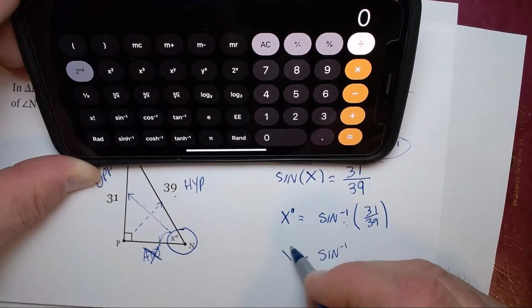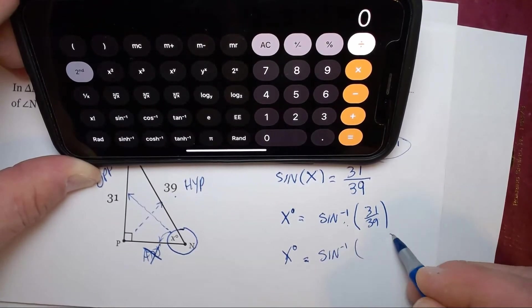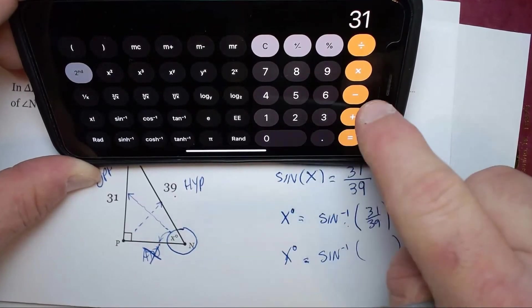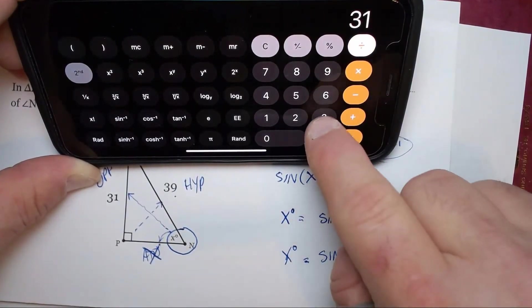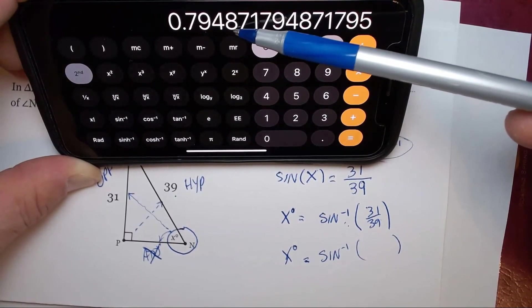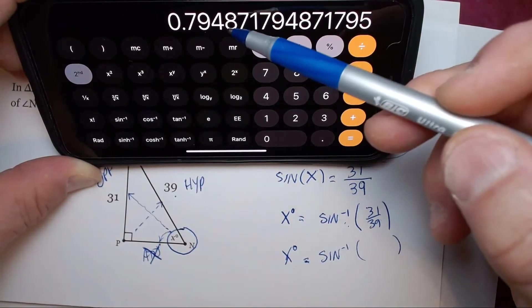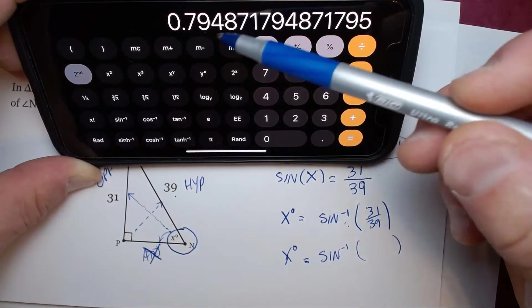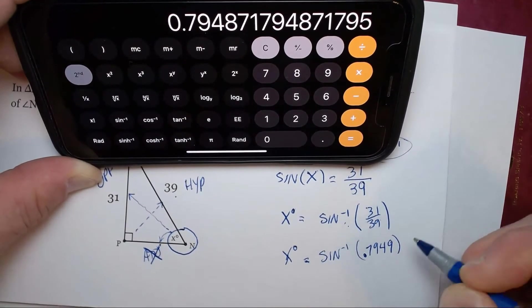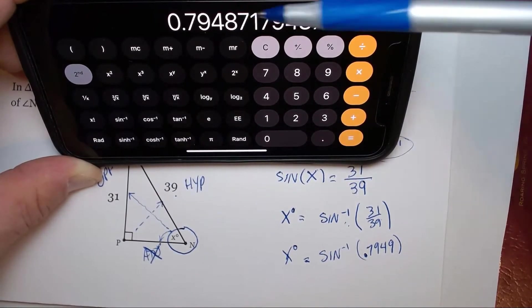X degrees equals sine inverse of some number. So I'm going to put in my calculator 31 divided by 39, and that gives me this number here. I'm going to round to four decimal places. 0.7948 with the seven falling will be 0.7949. We always carry it out to four decimal places, and you can see how I got that.